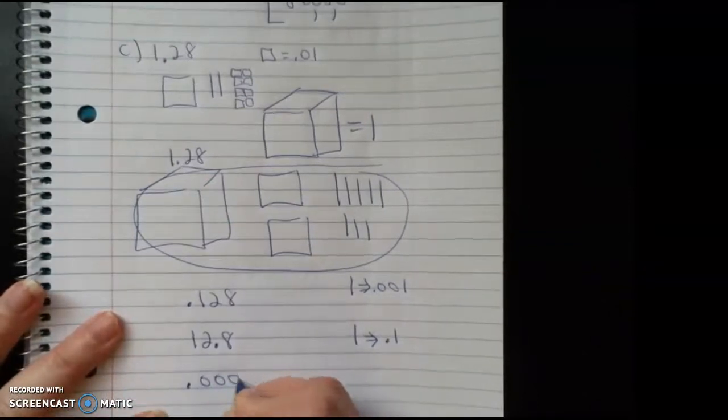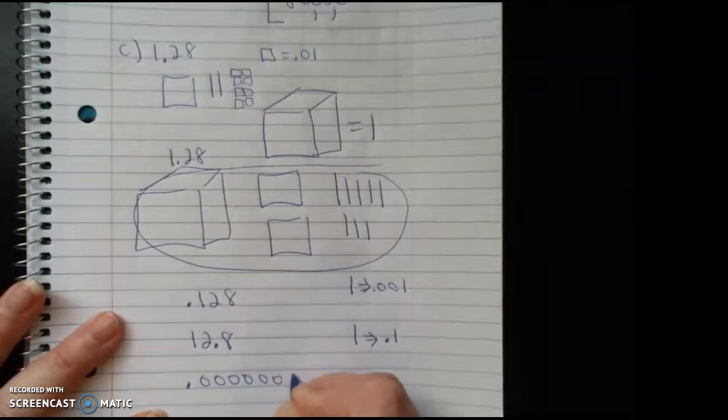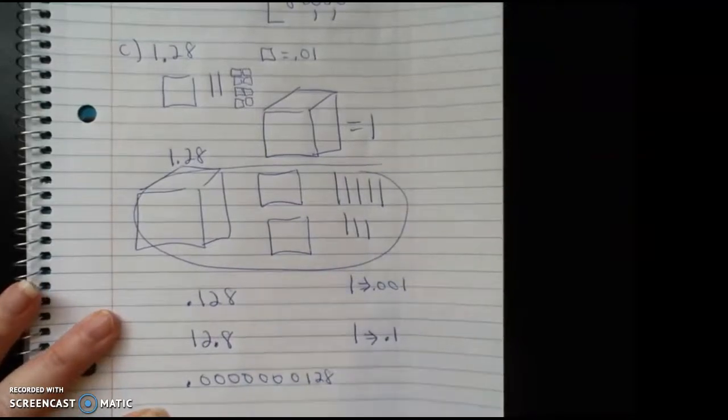I could do 0.000001 28. Okay. Lovely. And again, in this case, my longs, and I don't even know if I know the name of that tenths, hundredths, thousandths, ten thousandths, hundred thousandths, millionth.